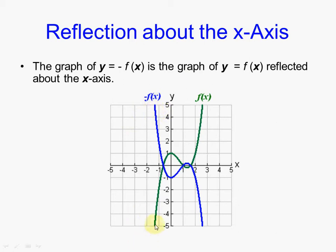This point is now located down there. And how do we know we're going to reflect around the x-axis? That's if we put a negative in front of the entire function, just like we did right here. Then there will be a reflection around the x-axis.